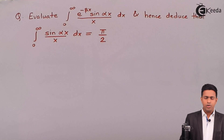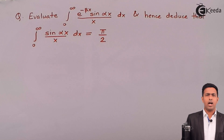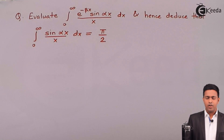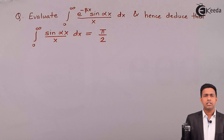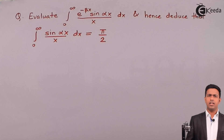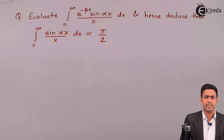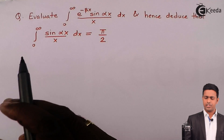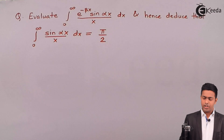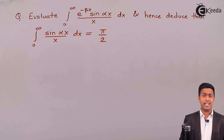Hello students. After learning the concept of DUIS, we are going to solve a numerical which has two parameters. We will solve this numerical by using the rule of Differentiation Under Integral Sign. Here we have the integral from 0 to infinity of e raised to minus beta x times sin(alpha x), whole upon x, dx.